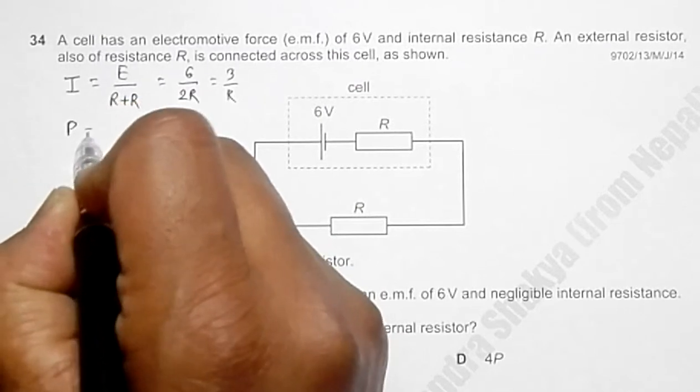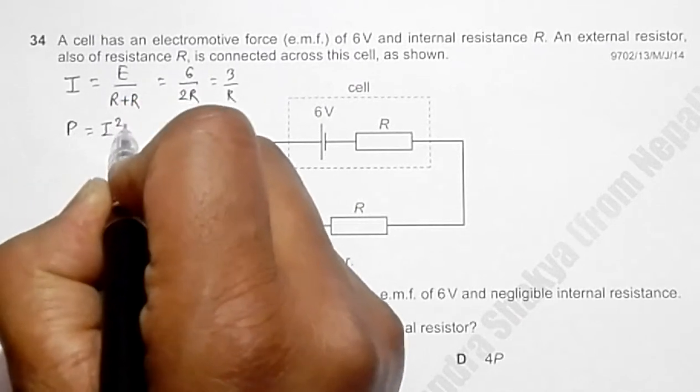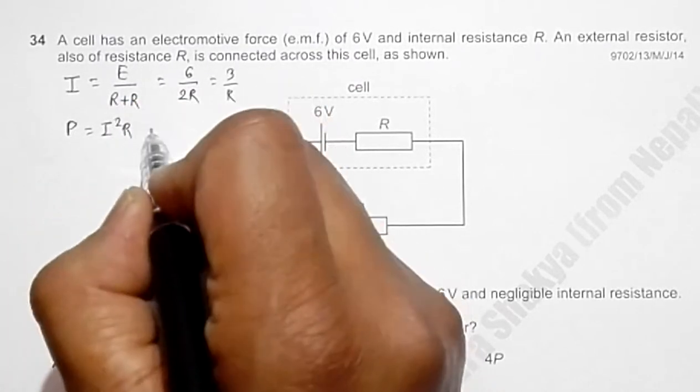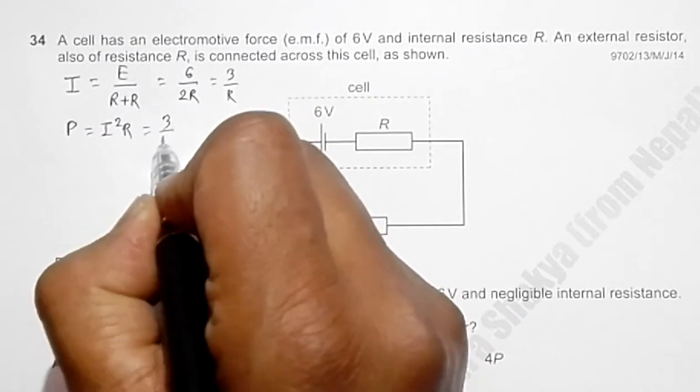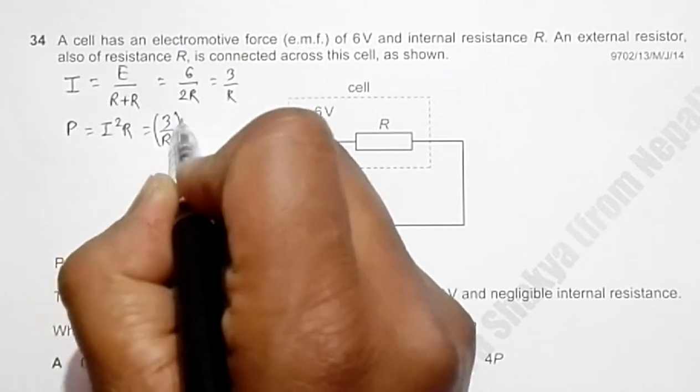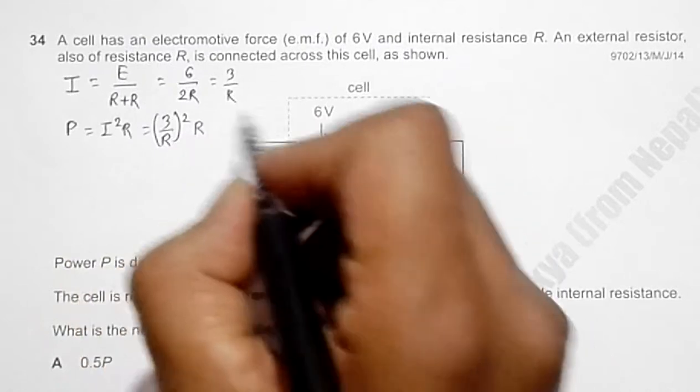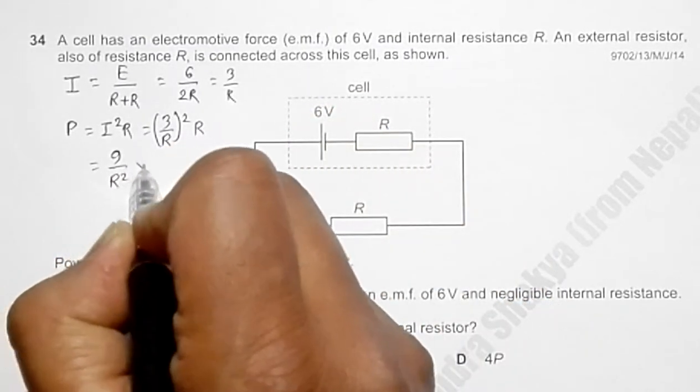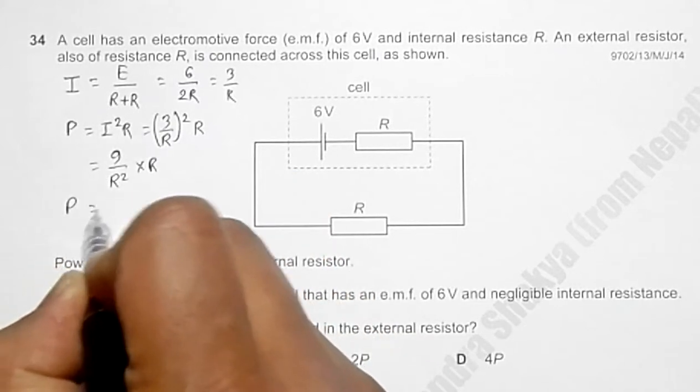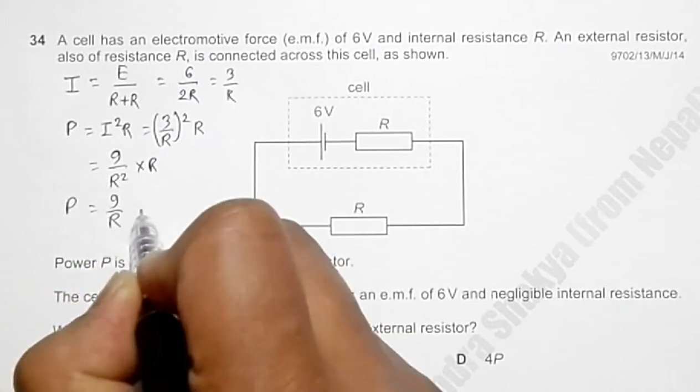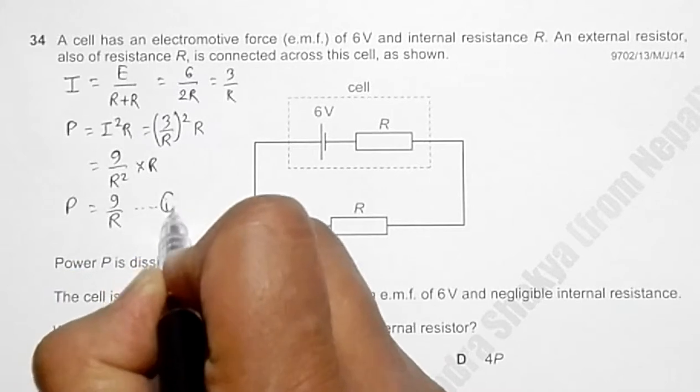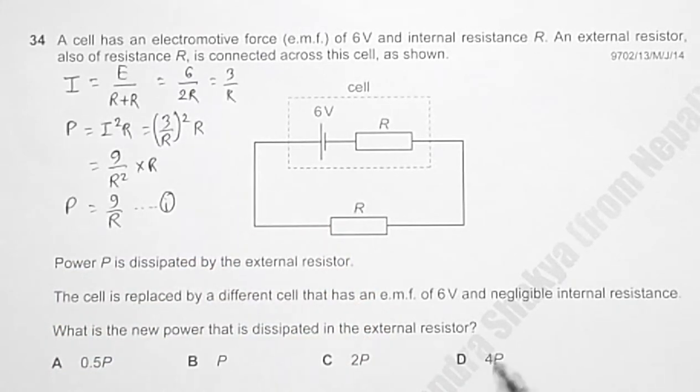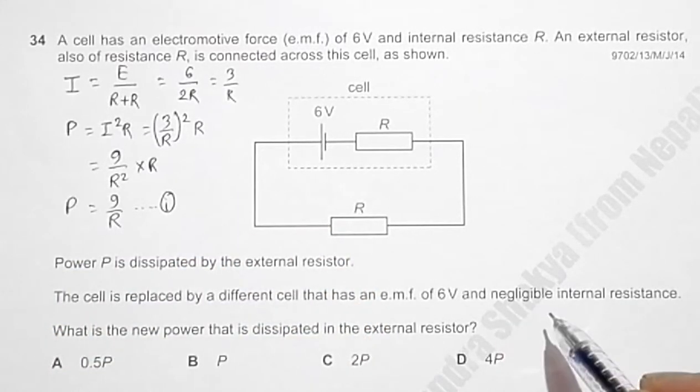So the power through the resistor will be equal to I squared into R. That's equal to 3 by R whole squared into R, so equal to 9 by R squared into R. So the power will be equal to 9 by R. This is the power exerted in the beginning. Now we have to replace it by something that has no internal resistance.